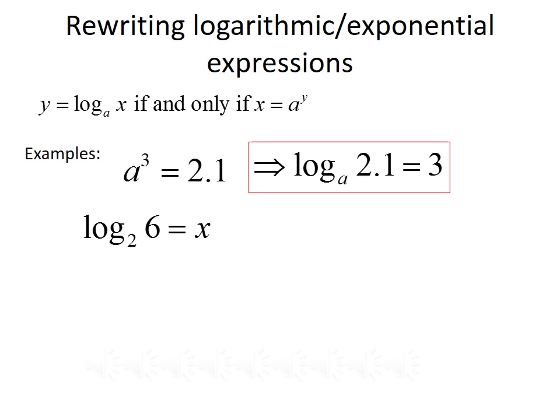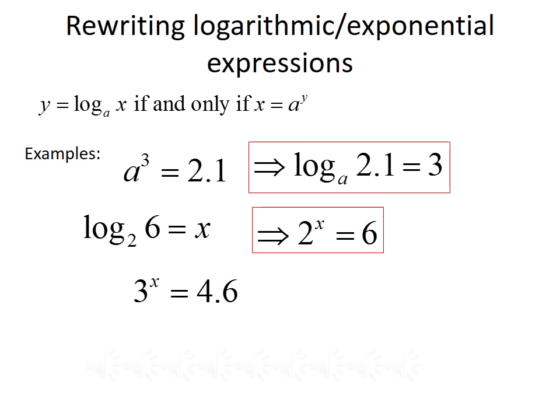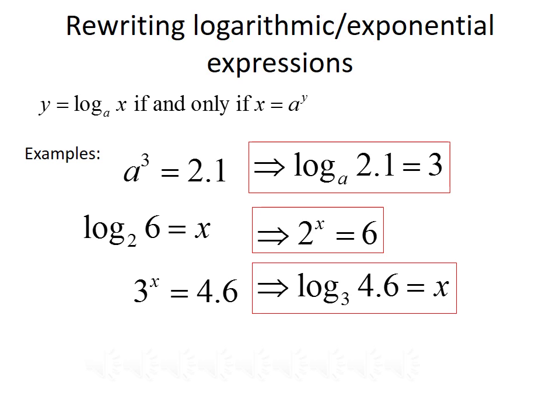Another example: log base 2 of 6 equals x. Our base is 2, so the base of the exponential will be 2. The number inside the logarithm goes to the other side, and x will be our exponent, so we rewrite this as 2 to the x equals 6. Finally, 3 to the x equals 4.6 can be rewritten as log base 3 of 4.6 equals x.